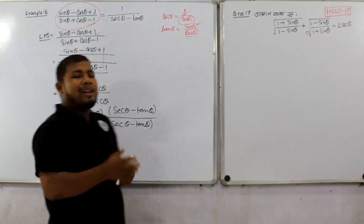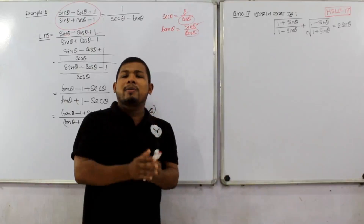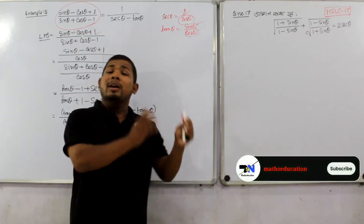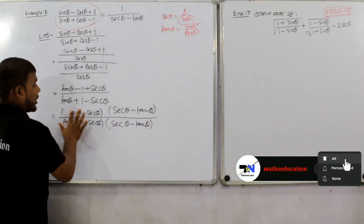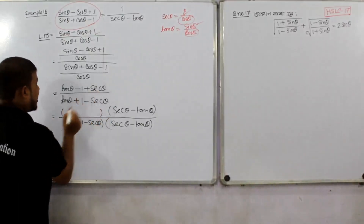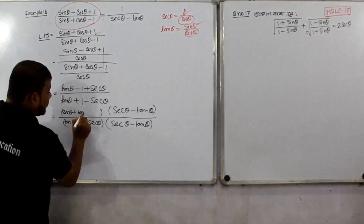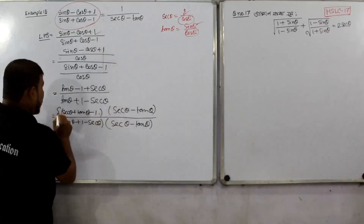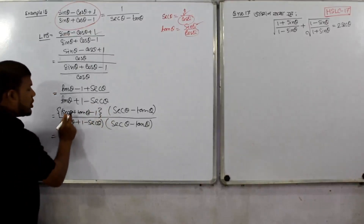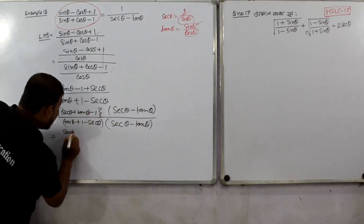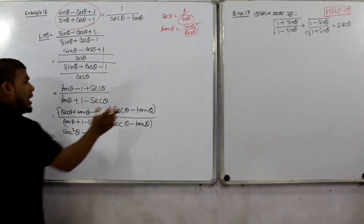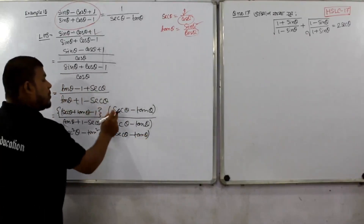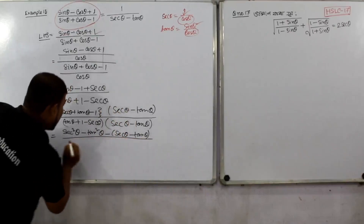I want to write this formula in position. We write sec theta plus tan theta minus 1, and sec theta minus 1. We can add the quantity: sec theta plus tan theta, into sec theta minus tan theta, which gives sec squared theta minus tan squared theta. This equals 1. So the sec theta minus tan theta in the denominator resolves accordingly.